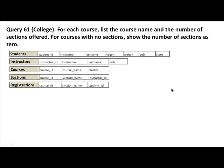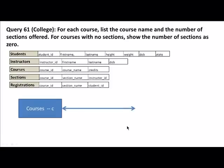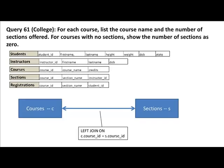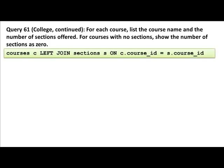So with this schema, for every course we list the course name and number of sections offered, and for courses with no sections, show the count as 0. We're going to do an outer join — if we list courses first, then our join will be courses LEFT JOIN sections. We join the two tables on the course ID field. So: courses C LEFT JOIN sections S ON c.courseID = s.courseID.